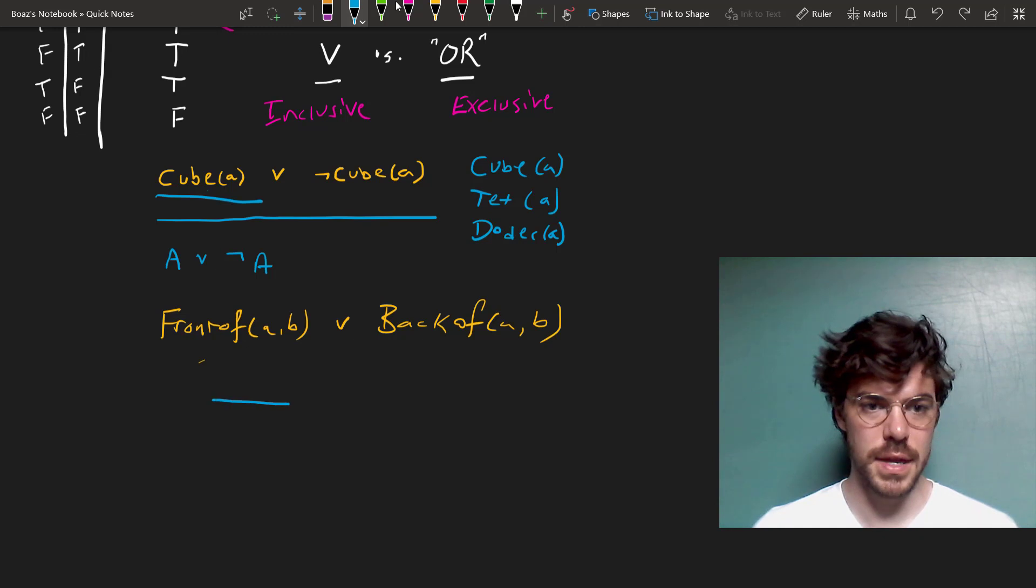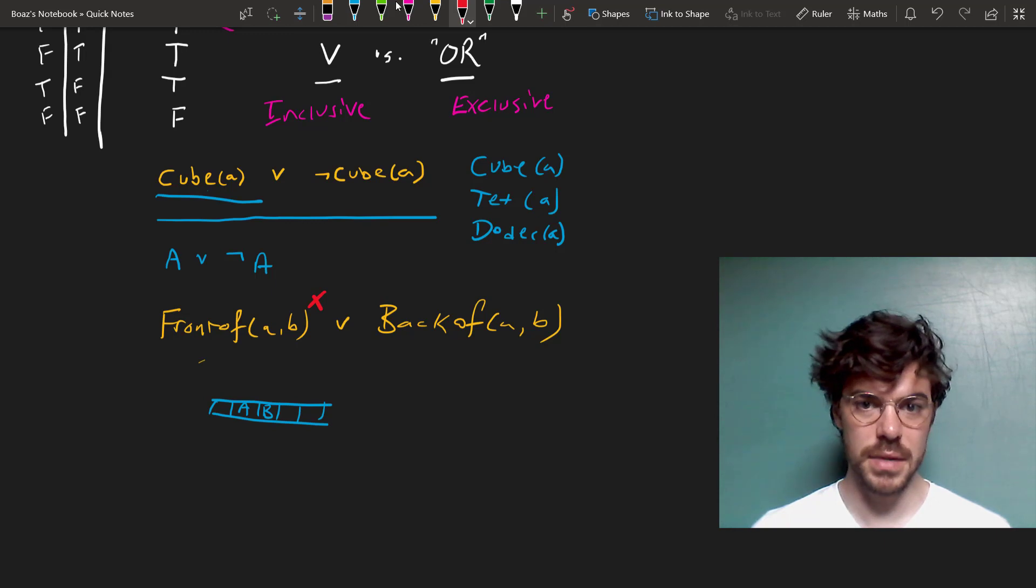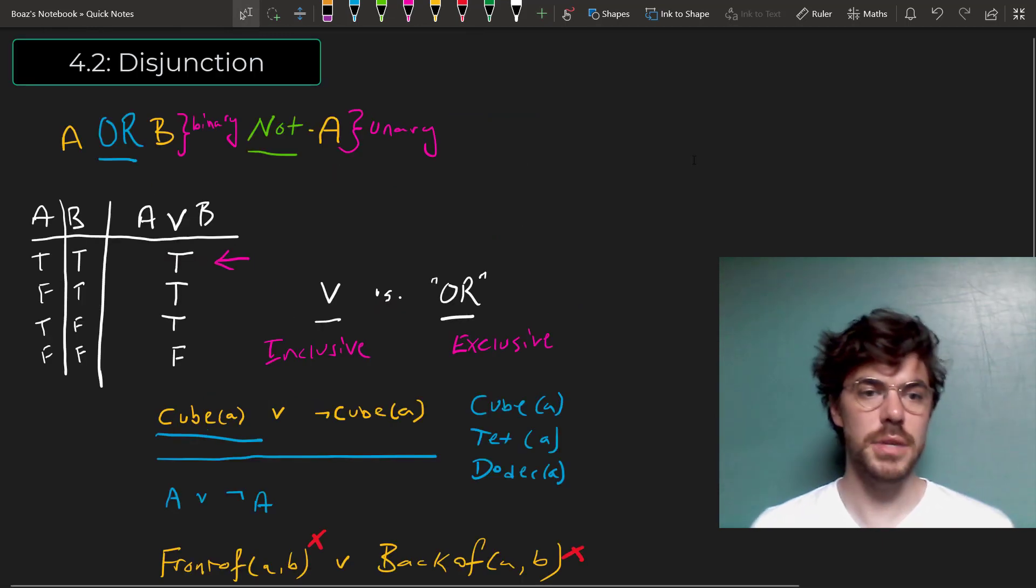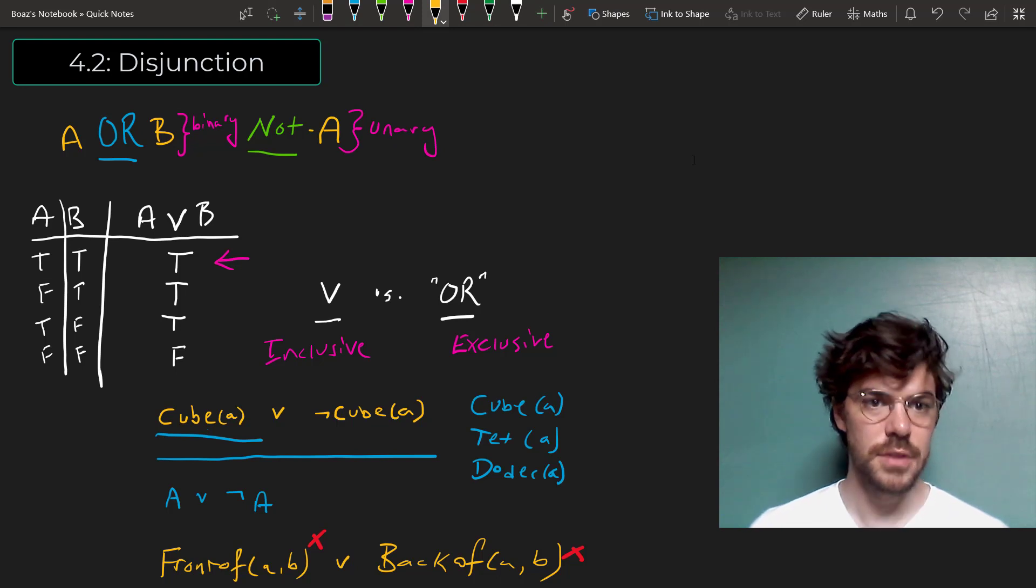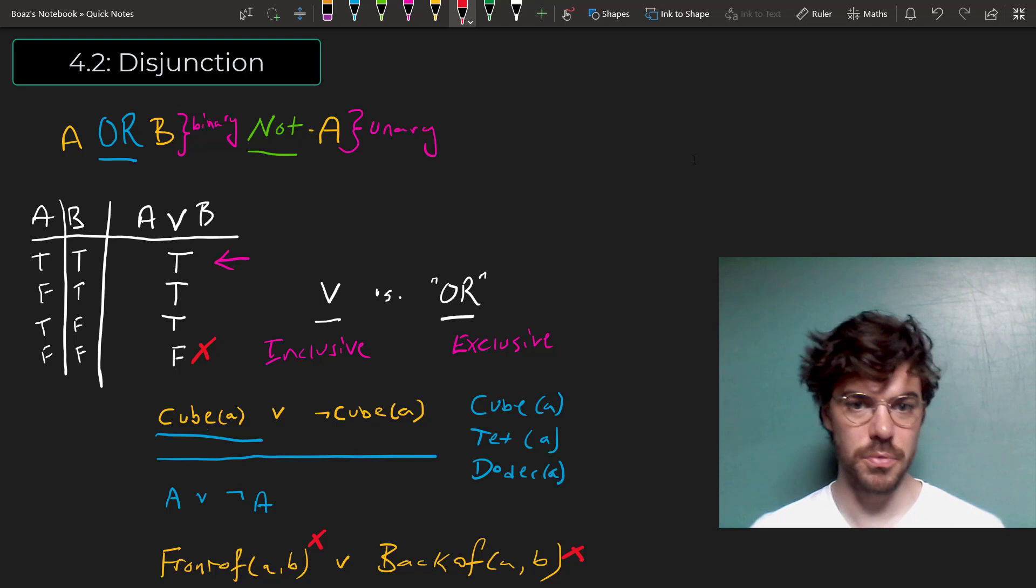Suppose we have our grid representing Tarski's world, and it so happens that A and B are in the same row. Then front of AB is false, and back of AB is also false. And as we know, disjunction requires that at least one of them be true, so that if both A and B are false, then A or B is also false. And that's how disjunction works in first-order logic.